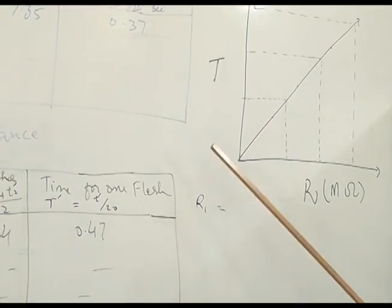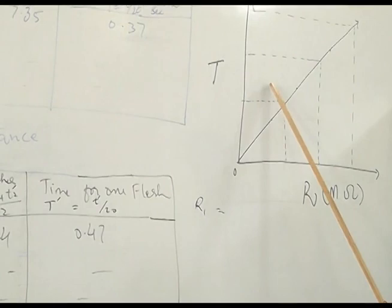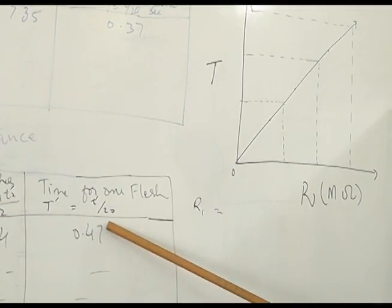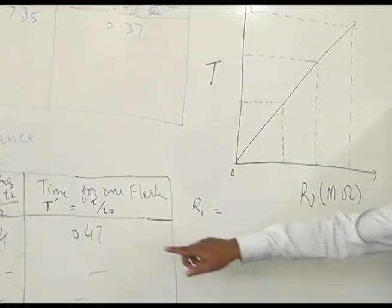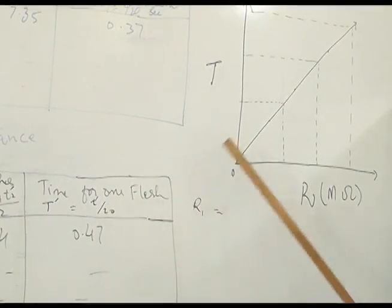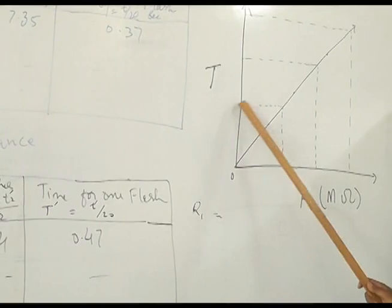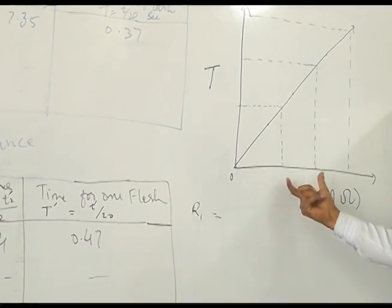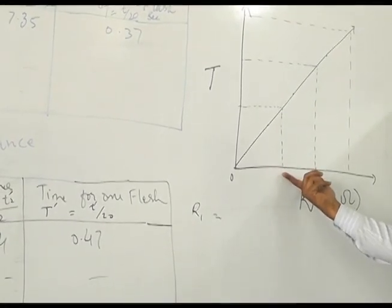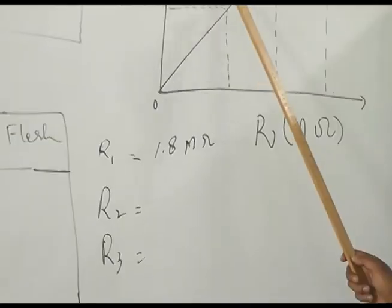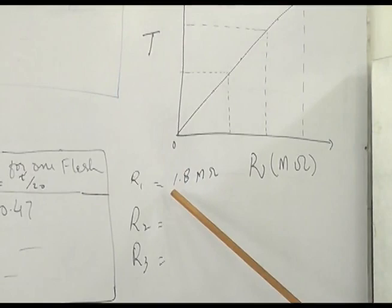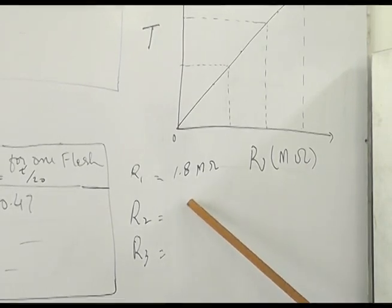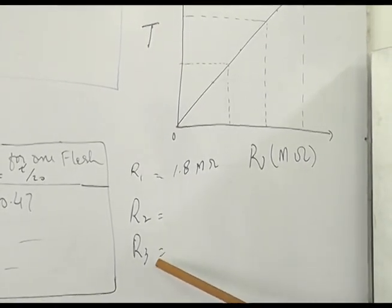Now we will find the unknown resistance with the help of the graph. T-dash is the time period for the unknown resistance. We find the value 0.47 along this line, and corresponding to this we calculate the unknown resistance along the X-axis. The calculated unknown resistance is 1.8 mega ohm. Similarly we can calculate R2 and R3.